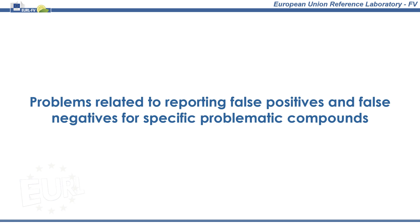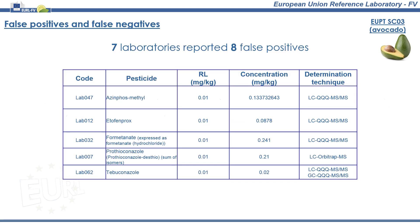Furthermore, we will show some LC-MS amenable compounds which share mass transitions and thus are prone to false identification. Recently, the URLFV carried out a proficiency test in avocado. Let me show you some of the false negatives and false positives reported by some participants alongside the source of error.